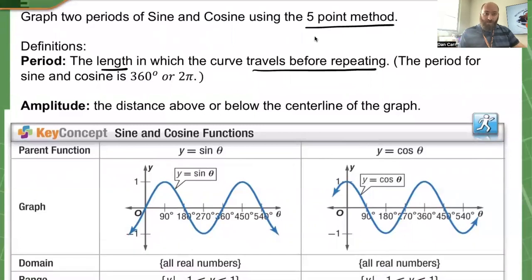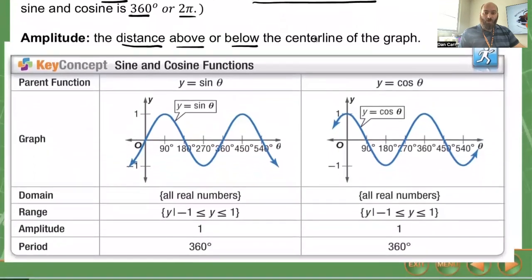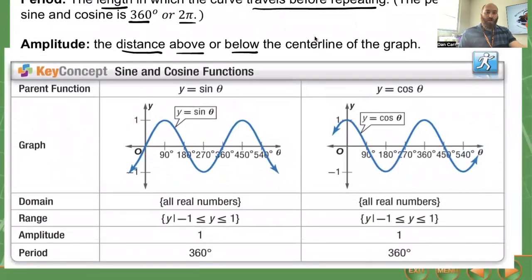A normal period for sine and cosine is either 360 degrees or 2 pi, depending on if you're defining in degrees or radians. Amplitude is the distance above or below the center line of the graph. When we talk about amplitude, we're talking about a positive distance.